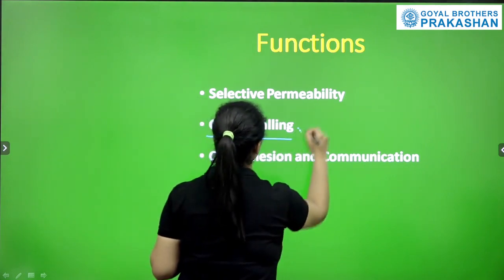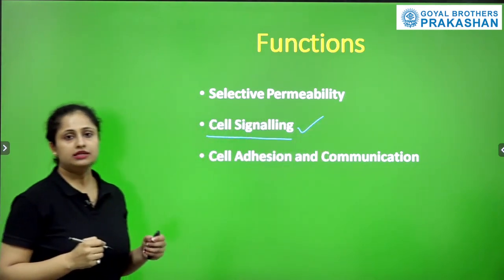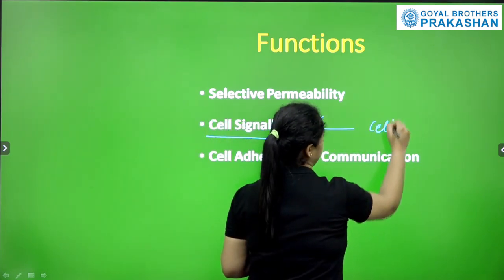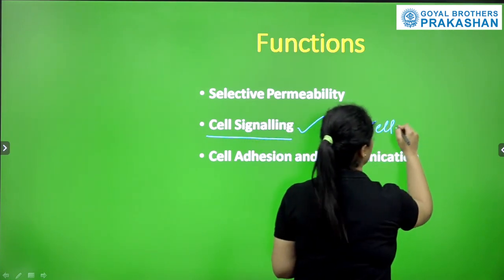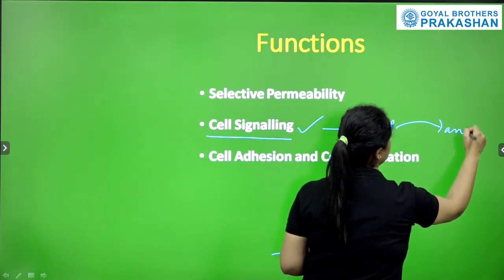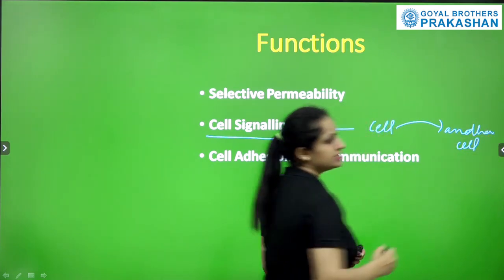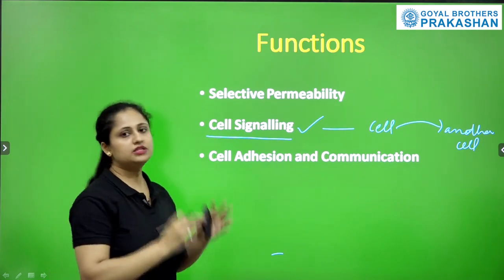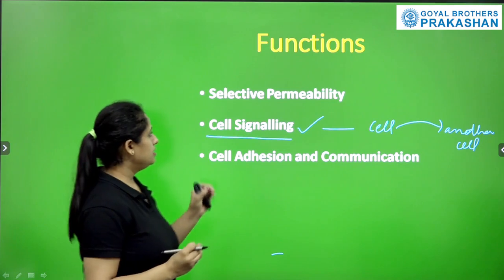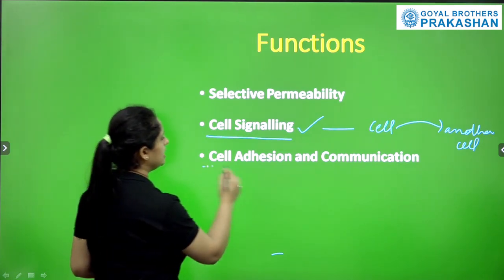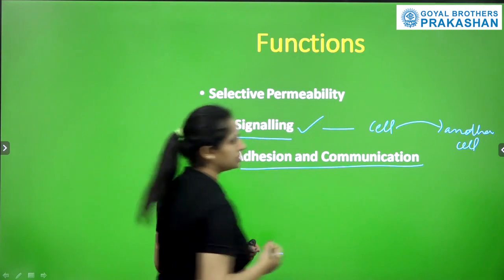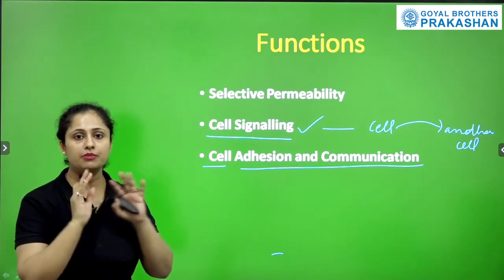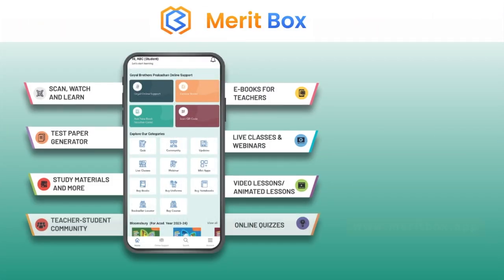Another function is cell signaling. Cell signaling is the mode by which one cell transfers signals or messages to another cell — it is a mode of transmission of signals from one cell to another. Another function is cell adhesion and communication, where one cell is attached to another cell with the help of their plasma membrane.